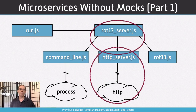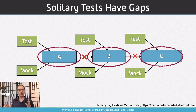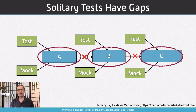What we're going to be doing today is building a microservice without mocks. If you've been watching the series, you've seen in previous episodes we've talked about testing without mocks. You can find those at jamesshore.com/blog/lunch-and-learn. Very briefly, mocks are a great way of testing that your code works in isolation — they can test that a unit works and that it calls its dependencies — but it can't test that it calls its dependencies correctly. So your mock-based solitary tests have gaps.